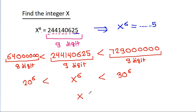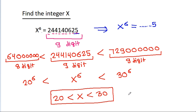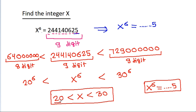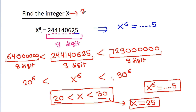That means x will be less than 30 and greater than 20. And we know that x power 6 is a number ending with 5. Between 20 and 30, x can only be 25. So x is 25.